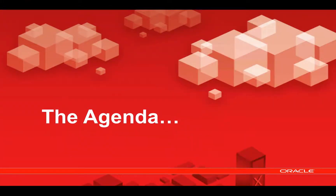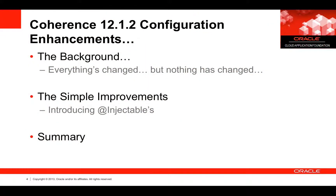Let's briefly look at our agenda for today. In the first part of the series we're going to look at the background — many of the reasons why we changed things and added improvements in Coherence 12.1.2, specifically to cache configuration. We'll also look at some simple improvements that will hopefully make your lives a lot easier and possibly reduce the amount of XML configuration that you need to do.